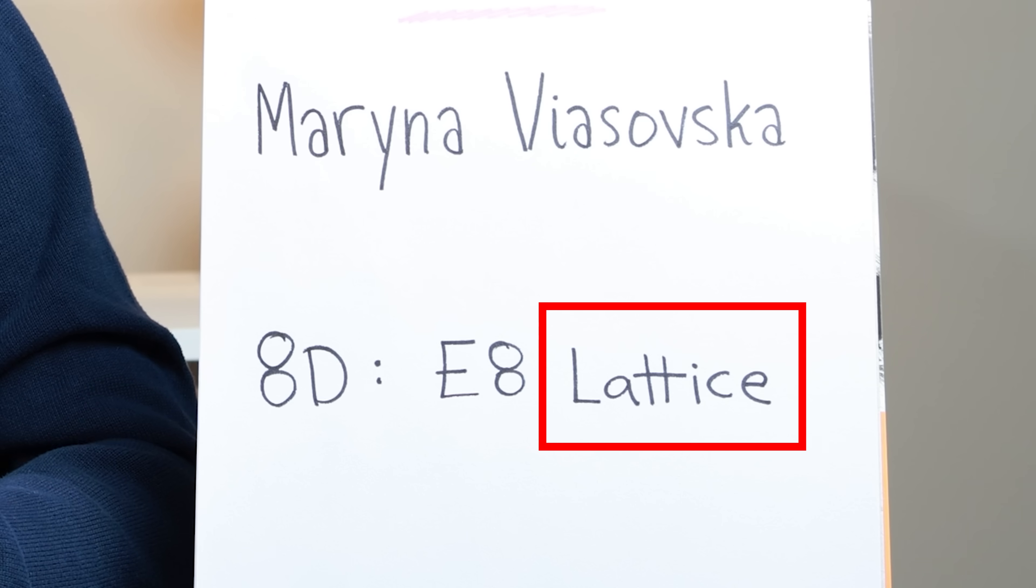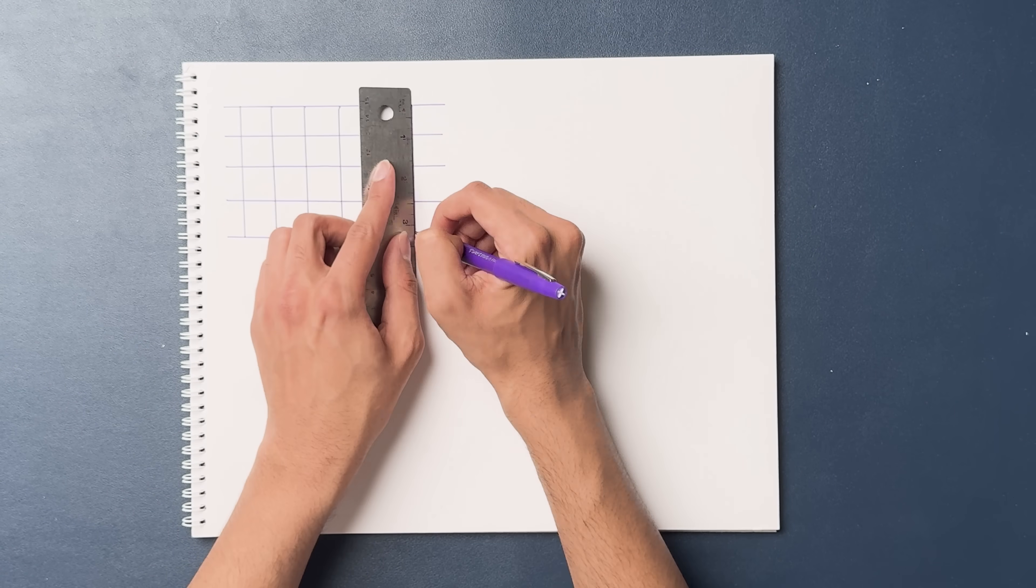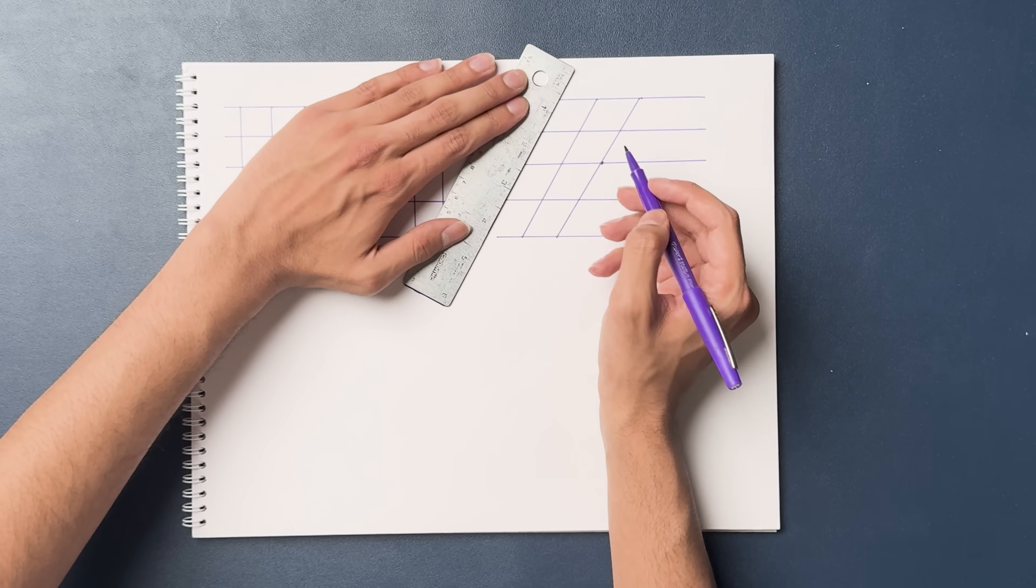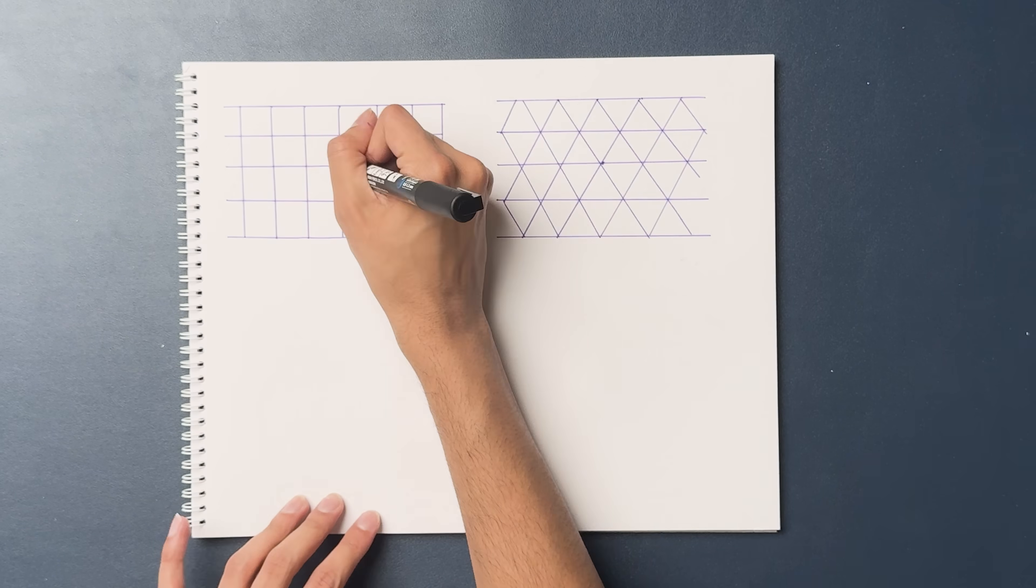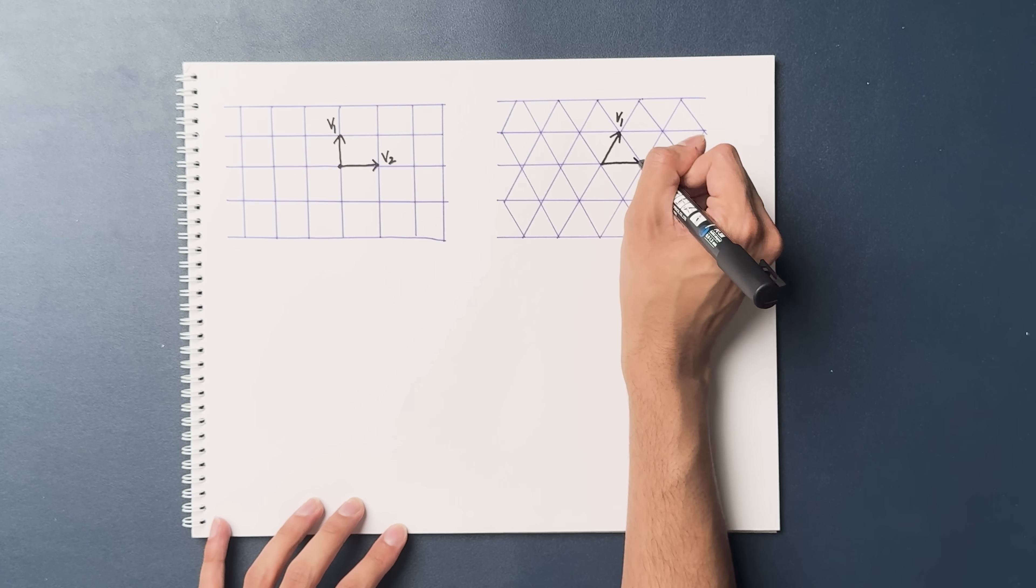But before we get ahead of ourselves, we should precisely define what we mean by sphere packing. The key word to keep in mind here is lattice. Let's start in 2D space. A lattice is just a grid. Here are two examples. Every lattice has two basis vectors, v1 and v2.